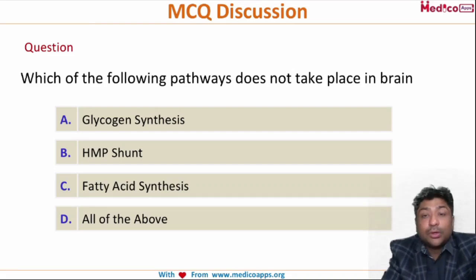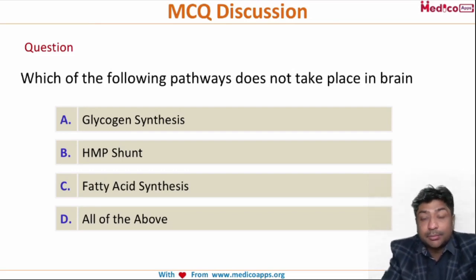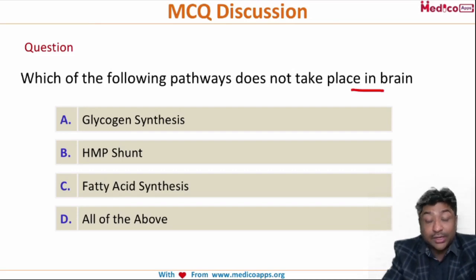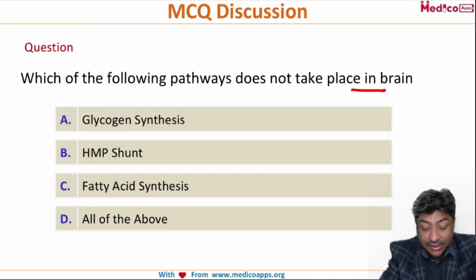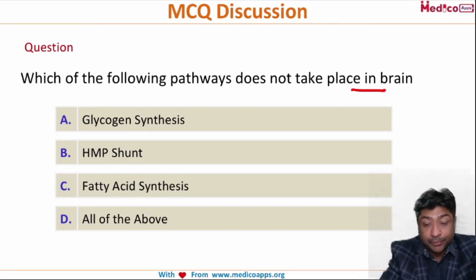Welcome to another MCQ discussion session at MedicoApps. In this session we are going to discuss a question which has appeared both in FMGE as well as NEET examination. The question is: which of the following pathways does not take place in the brain? Options are glycogen synthesis, HMP shunt, fatty acid synthesis, or all of the above — meaning none of these pathways take place in brain.